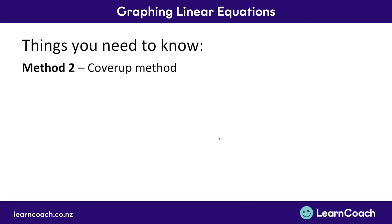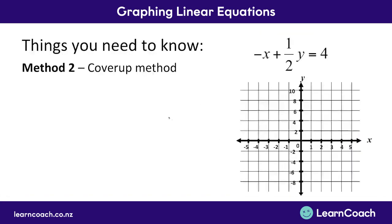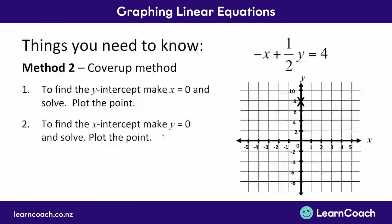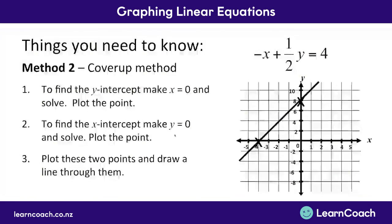The second method is the cover-up method. If you want to find y, you've got to cover up x, or make it equal 0, when you plot the point. So, half of y equals 4, so y must equal 8. We plot that point on the graph. In this case, to find x, we make y equal 0, or cover up y. That gives us negative x equals 4, so x would equal negative 4. We plot that on the graph, and we have our two points. Now we can rule a line straight through them. And that is our second answer.